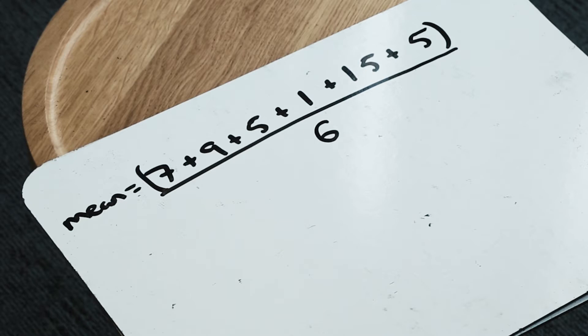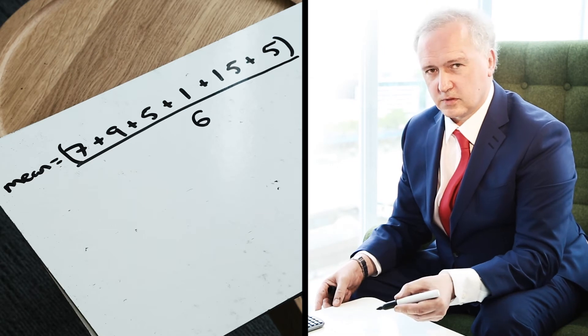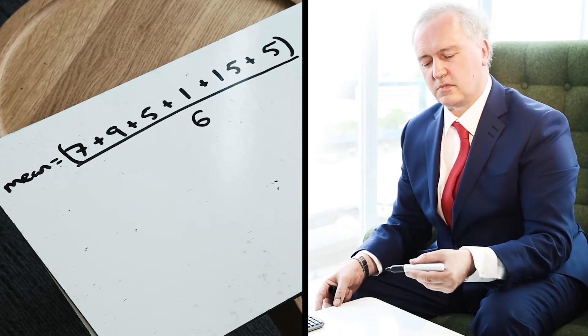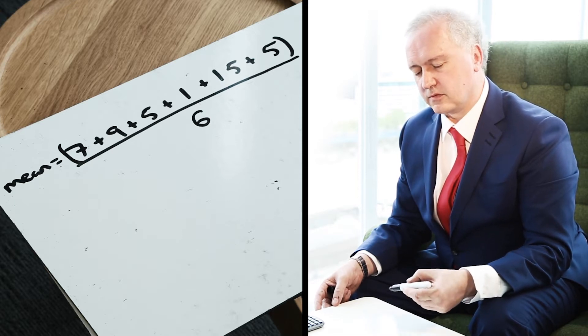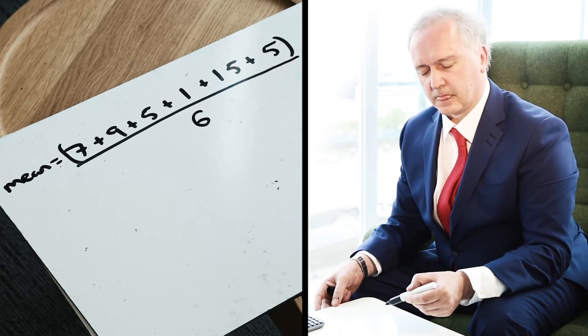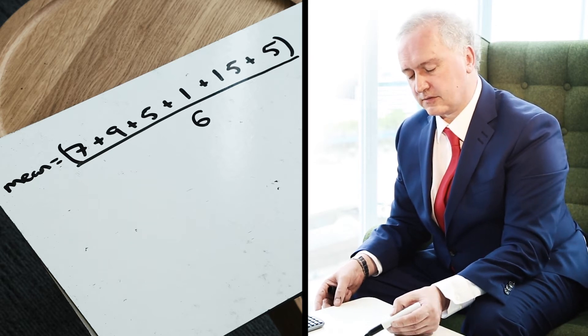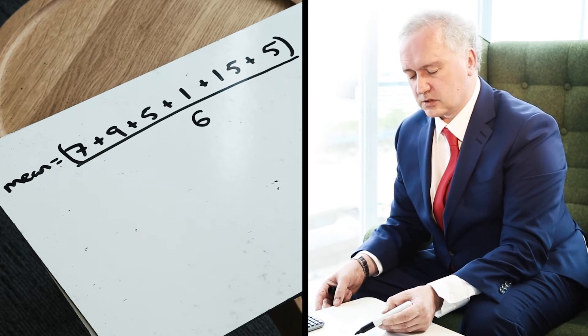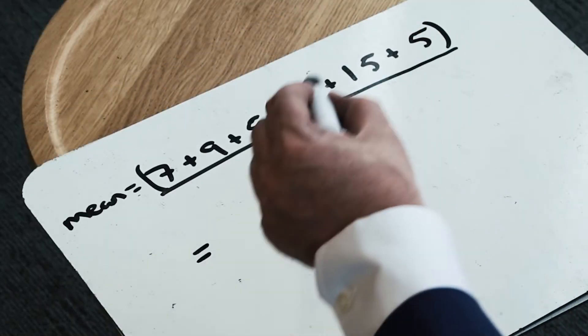What's really important in the exam is that rather than just obtaining the answer, we show clear, concise method work because the distribution of the marks gives you method marks for working through parts of calculation like this. So when I add 7 to 9 I get 16, then add 5 to get 21, add 1 for 22, add 15 for 37, and add 5 for 42.